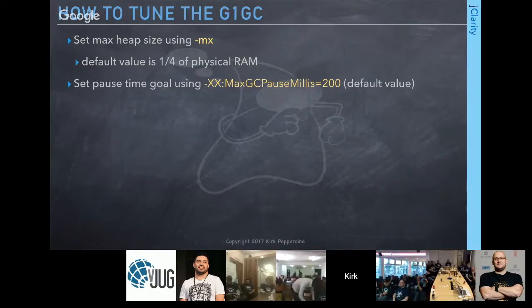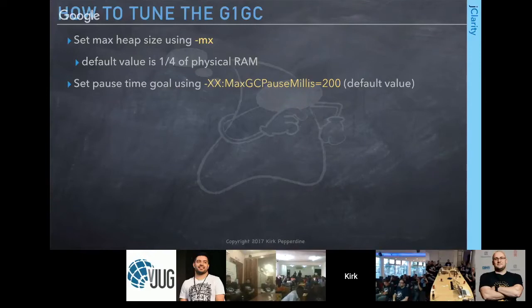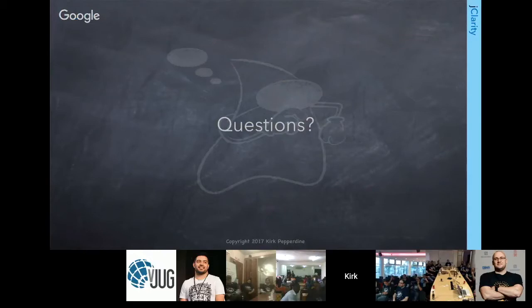The party line for tuning G1GC: set the max heap size — if you don't, it takes a quarter of your RAM. Set a pause time goal — if you don't, it defaults to 200 milliseconds. Ideally you don't have to set anything and everything works wonderfully, at which point the presentation could end.